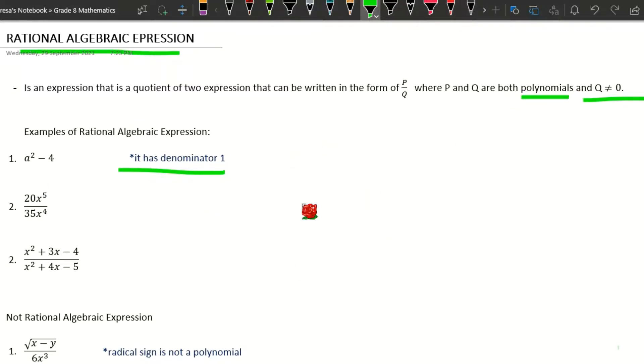Another example, we have (x² + 3x - 4)/(x² + 4x - 5). So this is an example of a rational algebraic expression that has three terms or trinomial polynomials.